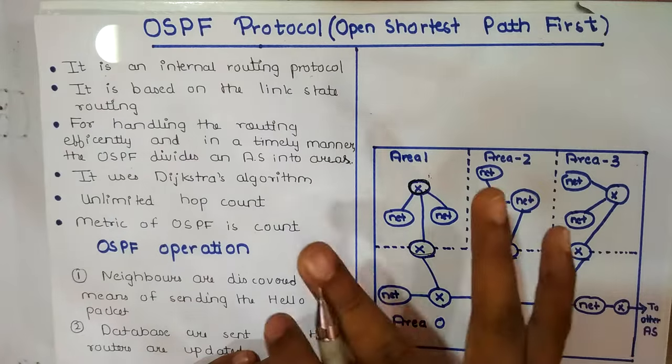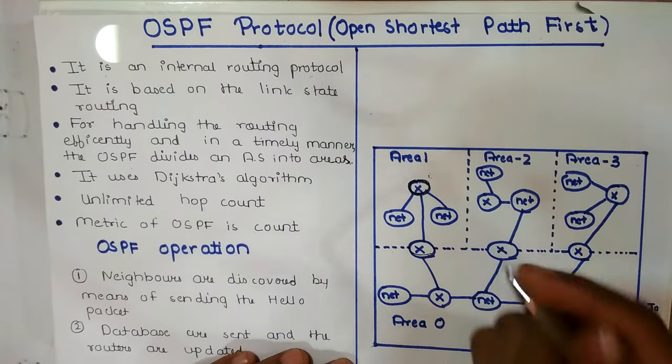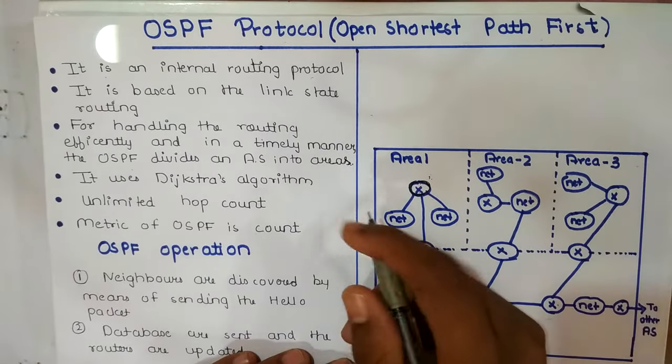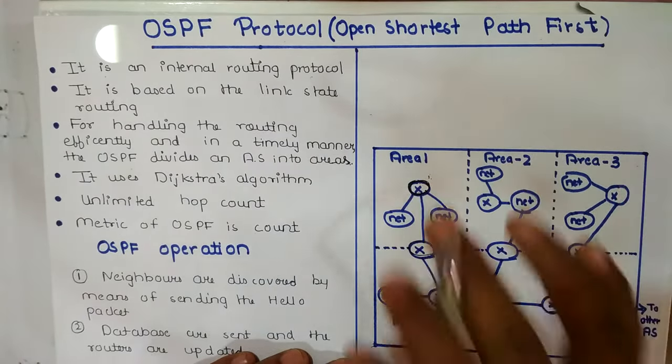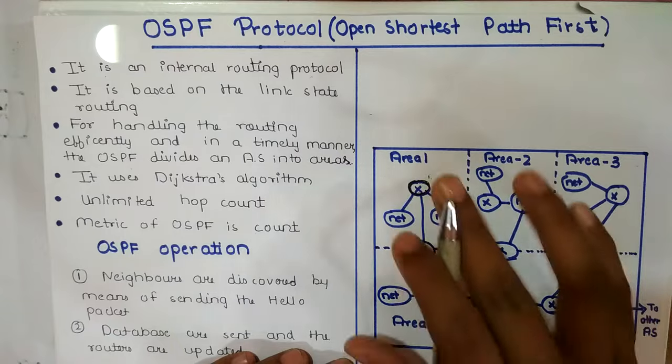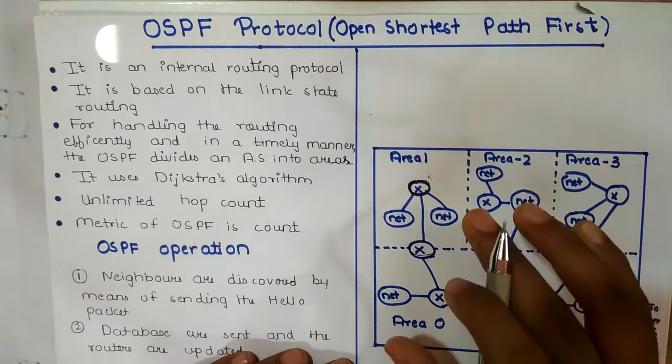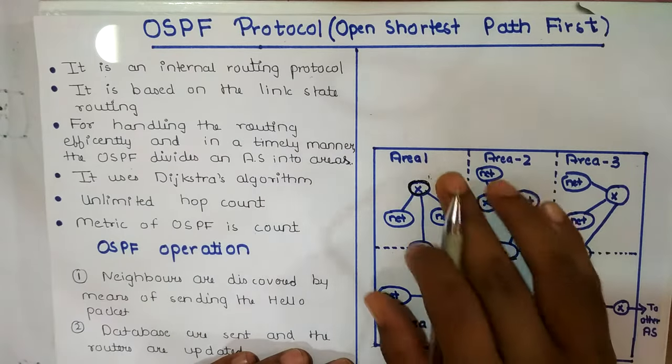In an autonomous system, there is only a single administrator. The OSPF protocol is the most widely used and popular internal routing protocol.